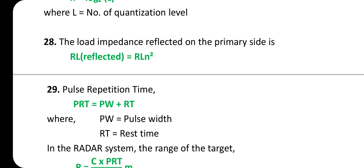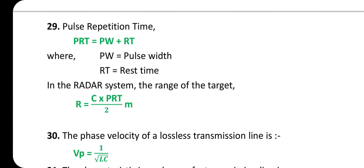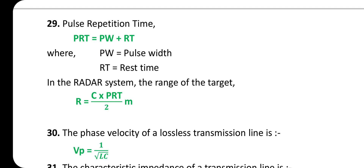Pulse Repetition Time (PRT) = PW + RT, where PW is the pulse width and RT is the rest time in the radar system. The range of the target: R = c × PRT / 2 meters.